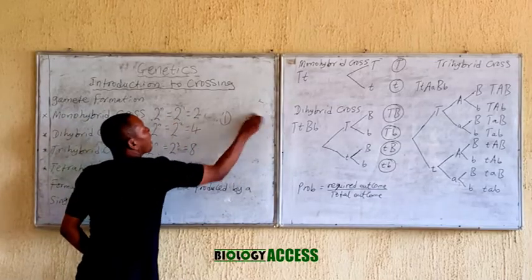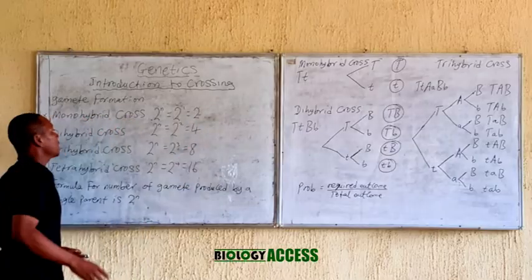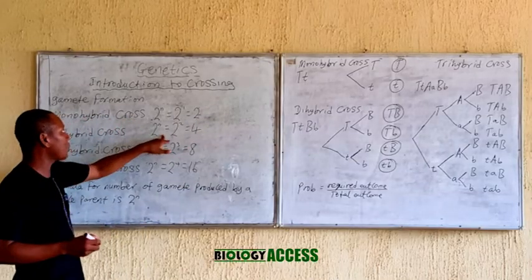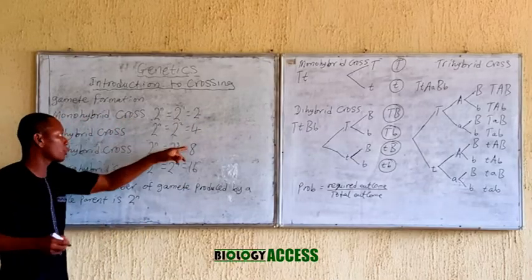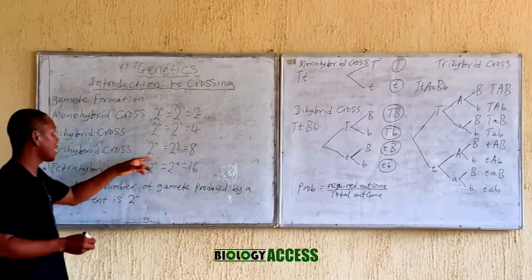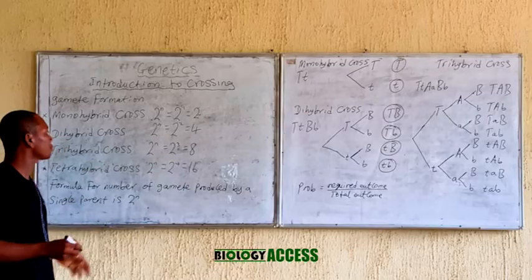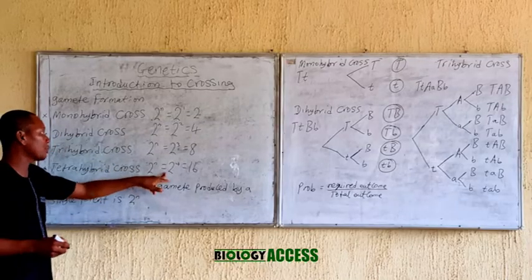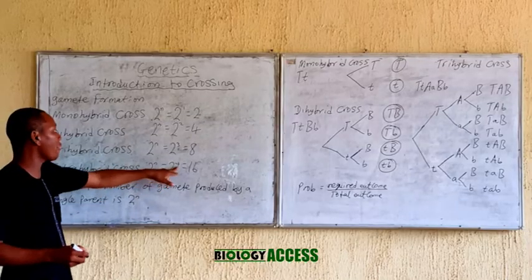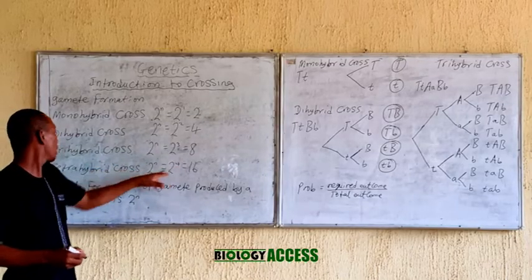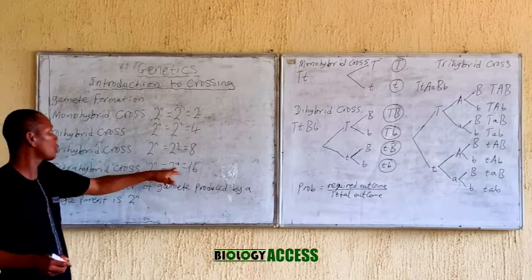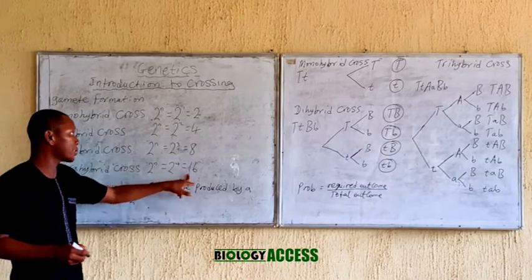The number of gametes produced by a single parent for dihybrid is 2 raised to the power 2, which is 4. For trihybrid it is 2 raised to the power 3, and for tetrahybrid it is 2 raised to the power 4.